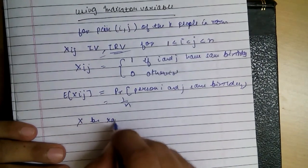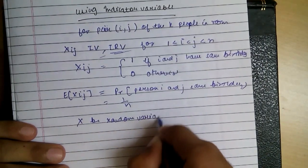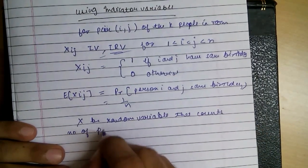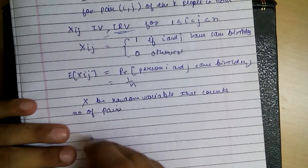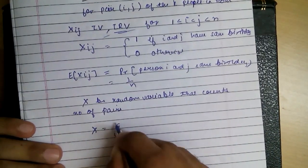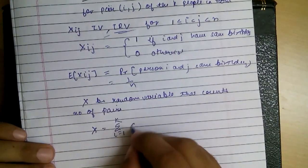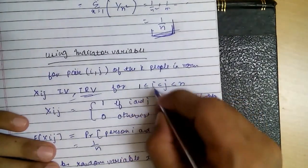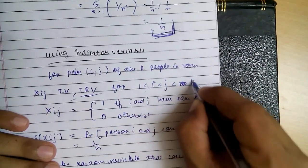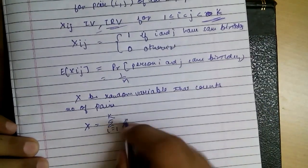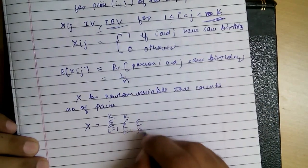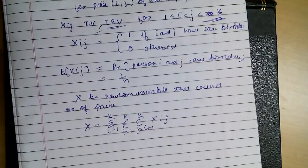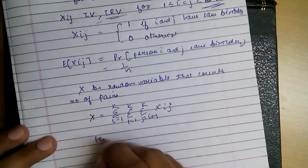X equals the summation — I made a mistake before, this should be i, j not n — k as there are k people in the room. Sigma i equal to 1 to k, summing the X sub ij values. So taking expectations on both sides, E of X equals E of sigma, from i equal to 1 to k, of X sub ij. Now applying linearity of expectation.